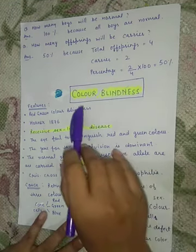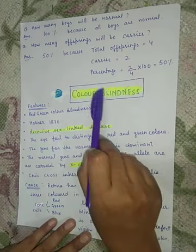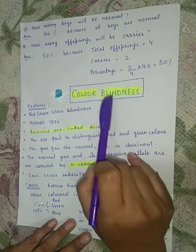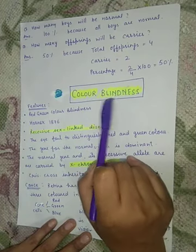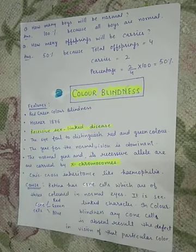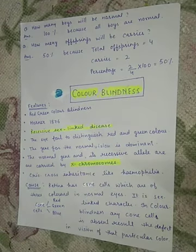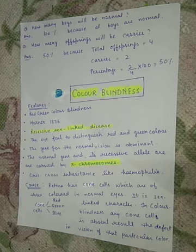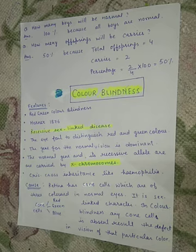Color blindness — as the name indicates, the person who has color blindness cannot differentiate colors well. That means the person is not able to tell which color is which.